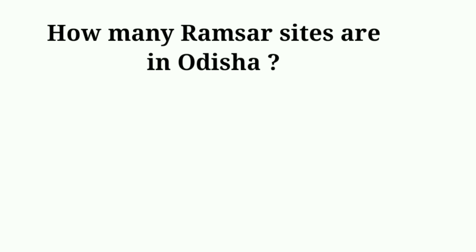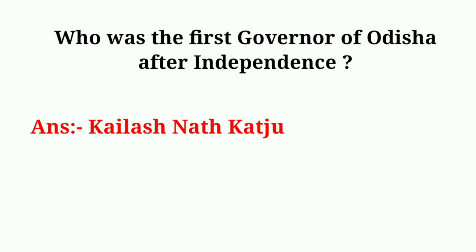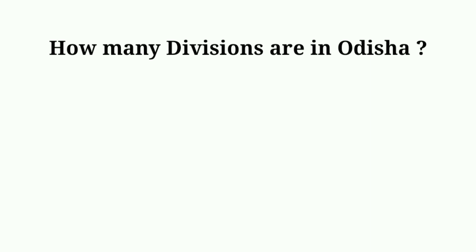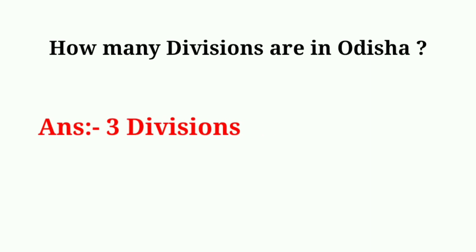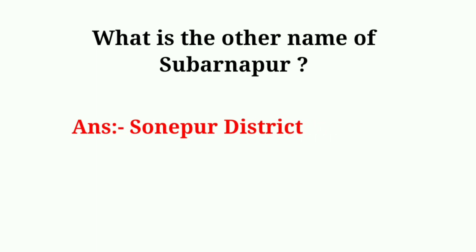How many Ramsar sites are in Odisha? Answer: 2. Who was the first governor of Odisha after independence? Answer: Kailasanath Katju. How many divisions are in Odisha? Answer: 3 divisions. What is the other name of Subarnapur? Answer: Sonepur district.